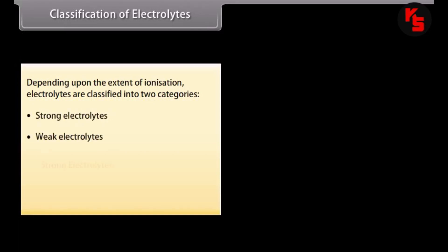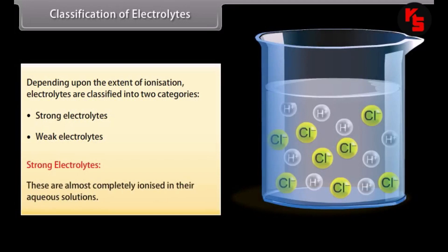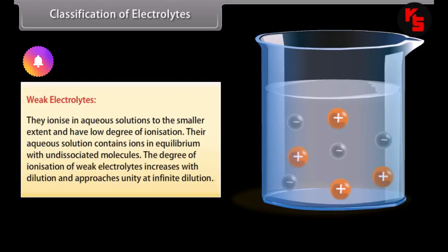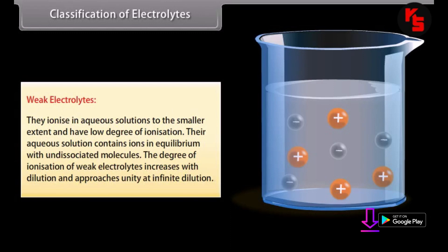Classification of electrolytes. Depending on the extent of ionization, electrolytes are classified into two categories: strong electrolytes and weak electrolytes. Strong electrolytes are almost completely ionized in their aqueous solutions — for example, HCl, NaOH, and KCl. Weak electrolytes ionize in aqueous solutions to a smaller extent and have a low degree of ionization; their aqueous solutions contain ions in equilibrium with undissociated molecules. The degree of ionization of weak electrolytes increases with dilution and approaches unity at infinite dilution — for example, NH₄OH and CH₃COOH.